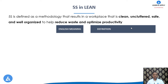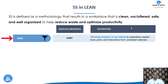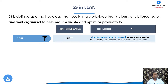Let's understand what these 5S are in detail along with their English meaning and definitions. The first S is Seiri; the English meaning of this word is Sort. In this first step of 5S, we eliminate whatever is not needed by separating the needed tools, parts, and instructions from the unneeded materials — segregating what is needed and what is not needed.